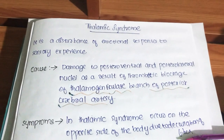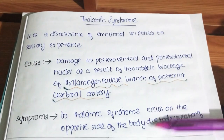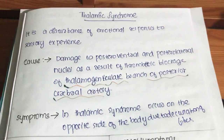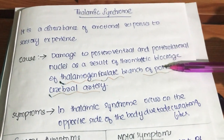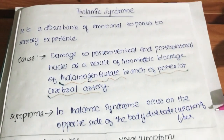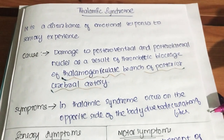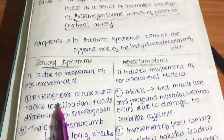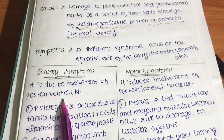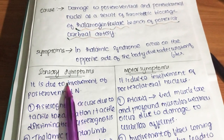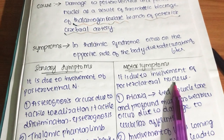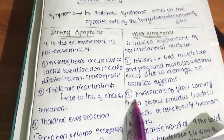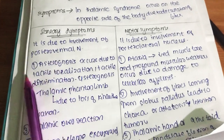Now the symptoms: due to the decussation of fibers, the symptoms will be seen on the opposite side. When the posteroventral nucleus is involved, it leads to sensory symptoms. When the posterolateral nucleus is involved, it leads to motor symptoms. There are three sensory symptoms and three motor symptoms.